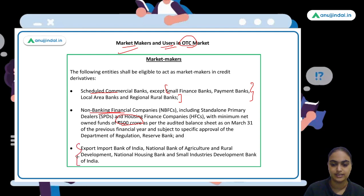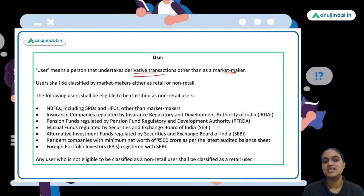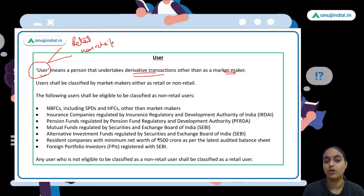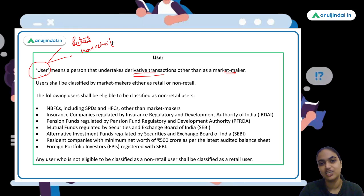Users are those who undertake derivative transactions but are not market makers. Users have been classified into two categories — retail and non-retail. Non-retail users include large entities like NBFCs, insurance companies, pension funds, mutual funds, alternate investment funds, resident companies with a net worth of 500 crores, and foreign portfolio investors registered with SEBI. All others are classified as retail users.